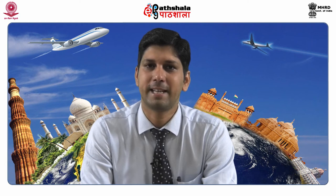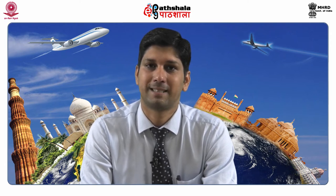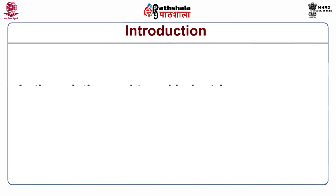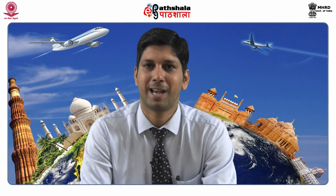Each ticket contains information including the name of the flight, route type, fare type, and restrictions imposed by the airlines. The detailed information of the ticket is stored under a unique code called the PNR code. In the aviation and travel industry, a Passenger Name Record (PNR) is a unique code given so that all the information is stored in the database of a computer reservation system.